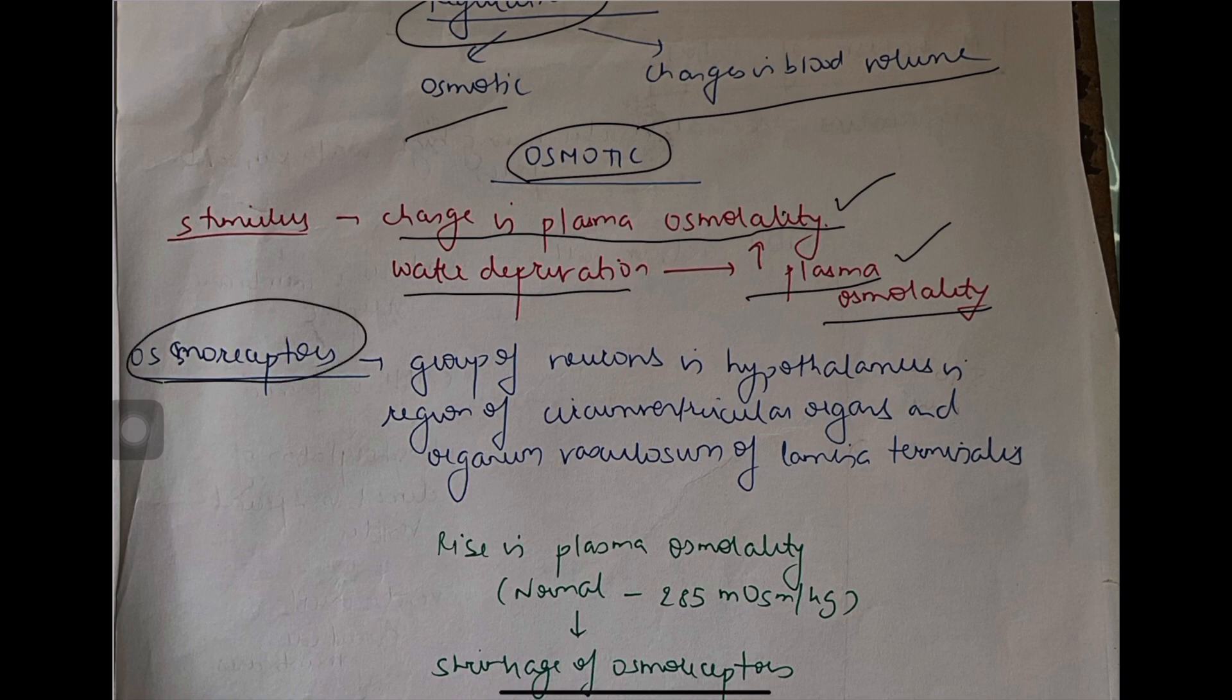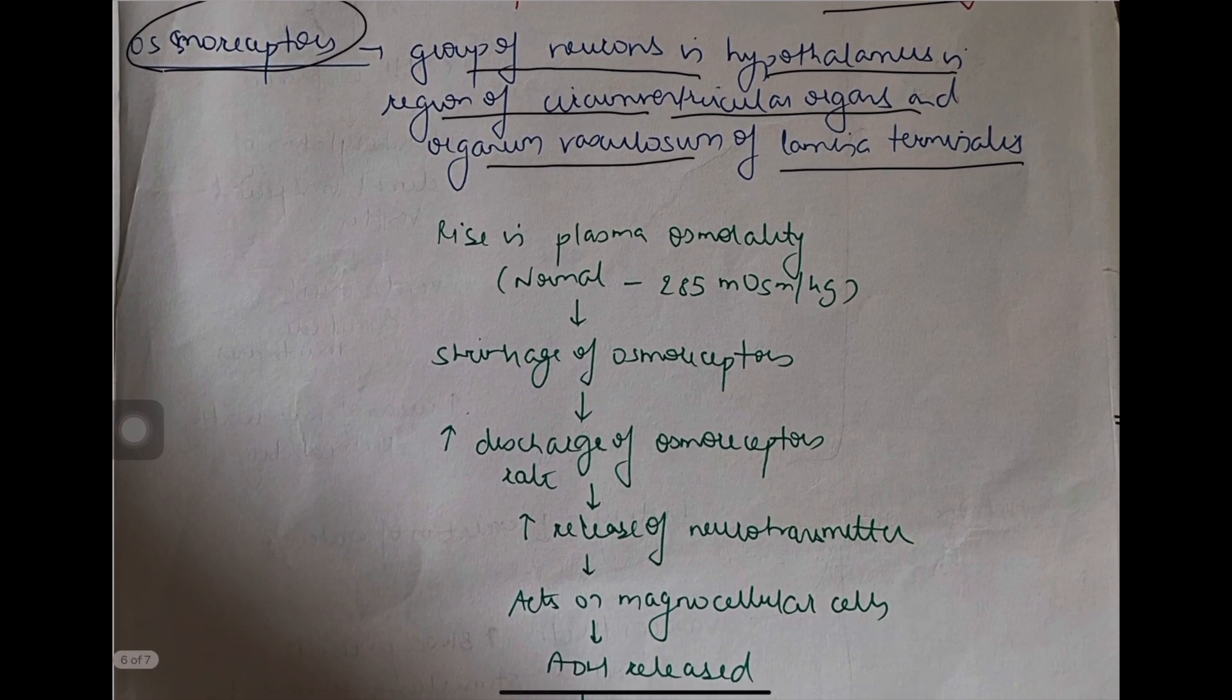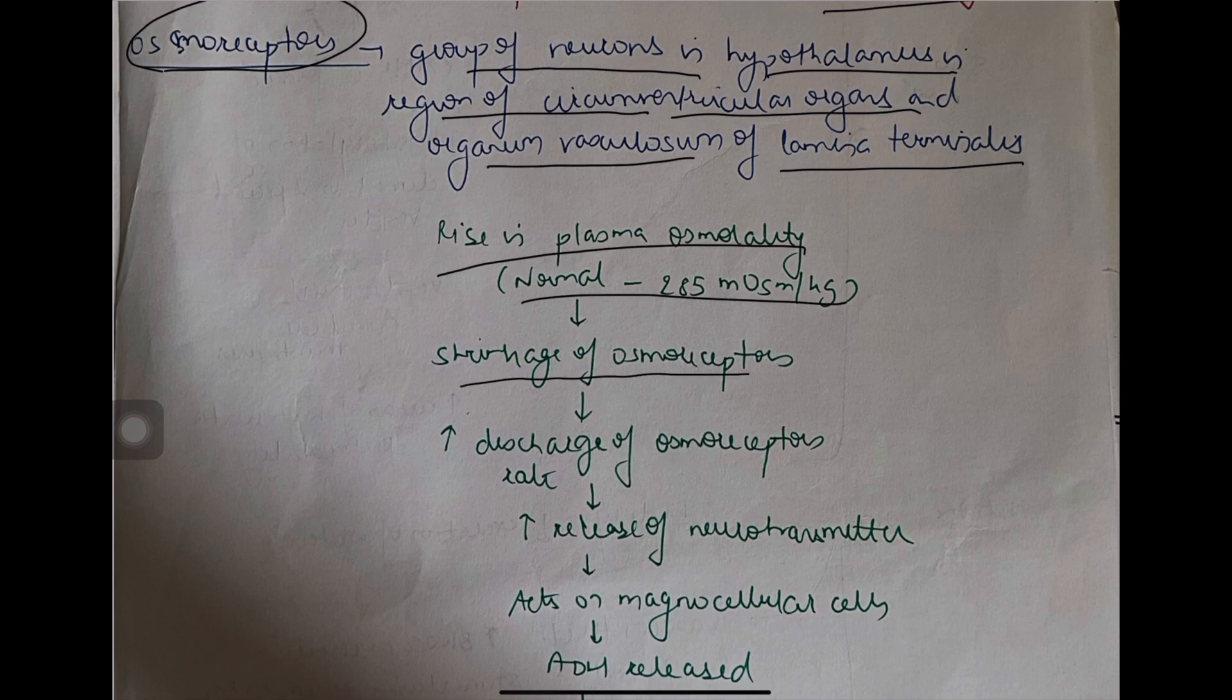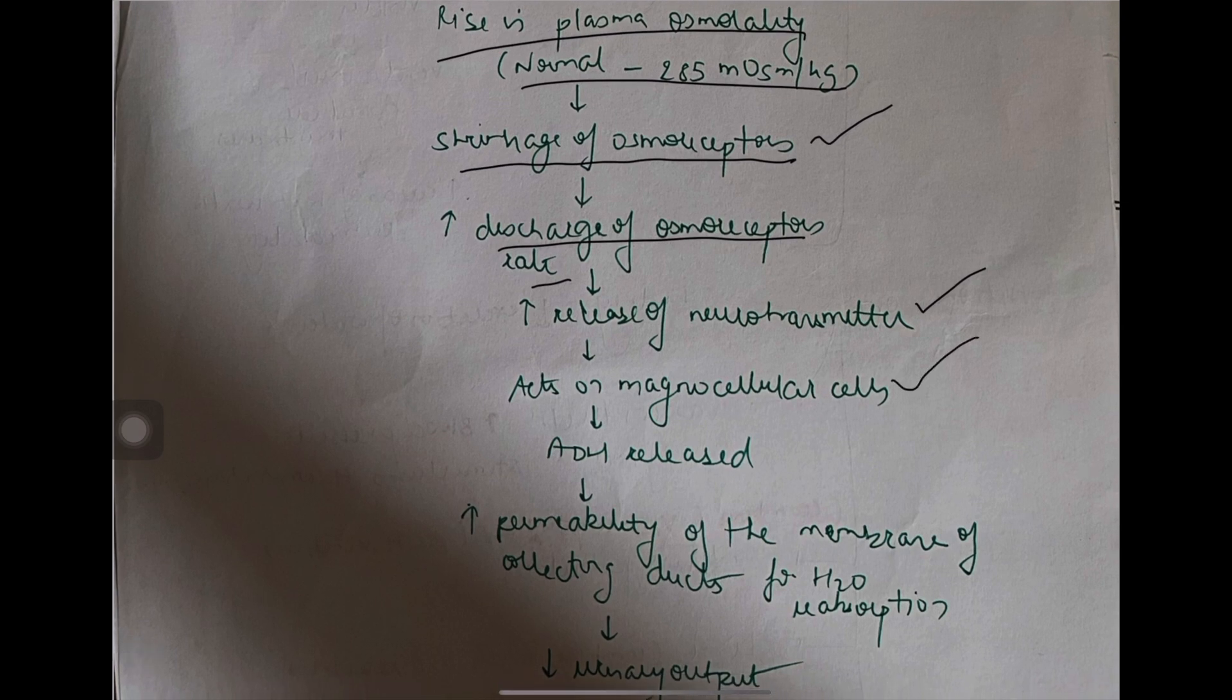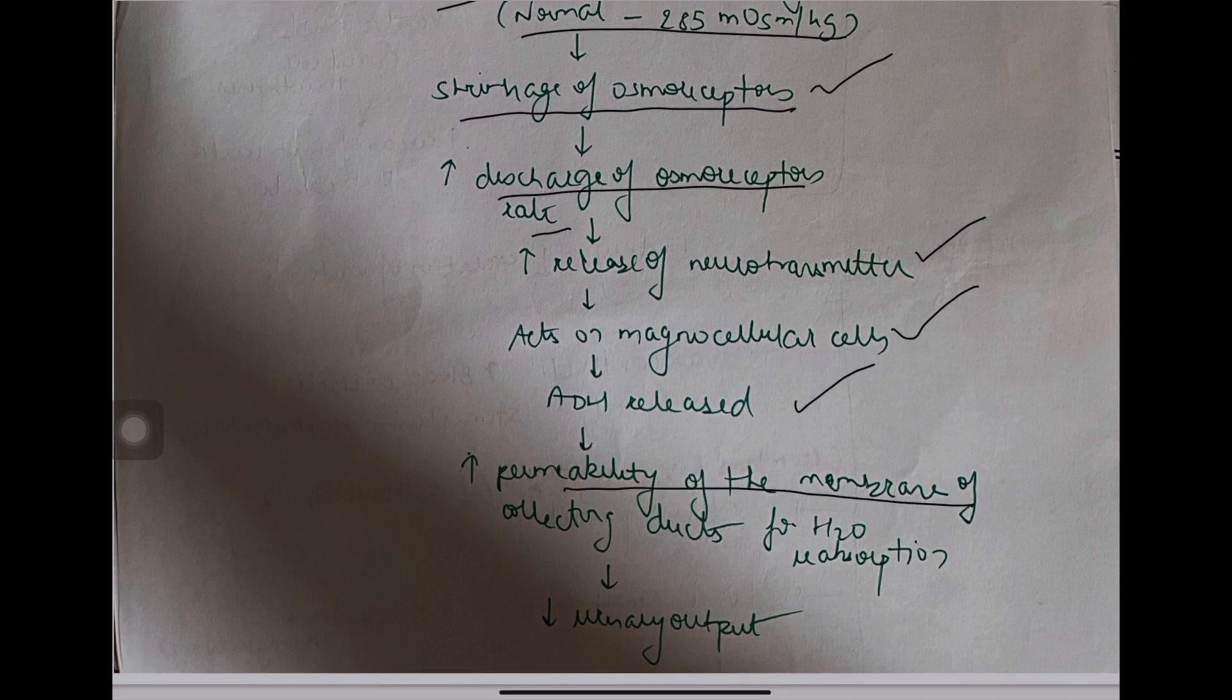The osmoreceptors - what are osmoreceptors? They are a group of neurons in hypothalamus in the region of circumventricular organs and organum vasculosum of lamina terminalis. A rise in plasma osmolality, this is the normal value, causes shrinkage of the osmoreceptors. That means they become smaller. This increases discharge of osmoreceptors rate. This causes increased release of neurotransmitter. React on the magnocellular cells. ADH is released. ADH, as per its action, increases the permeability of the collecting ducts, a part of the nephron in kidney for H2O reabsorption. This decreases the urinary output.